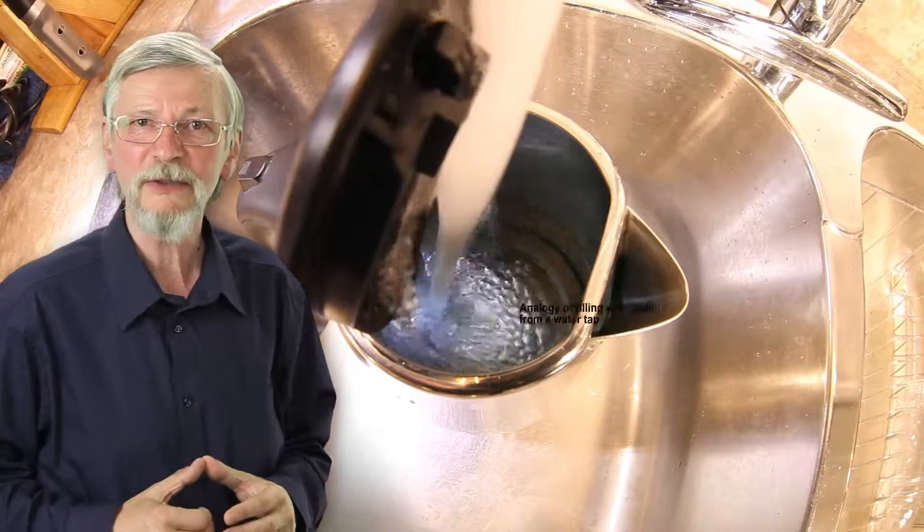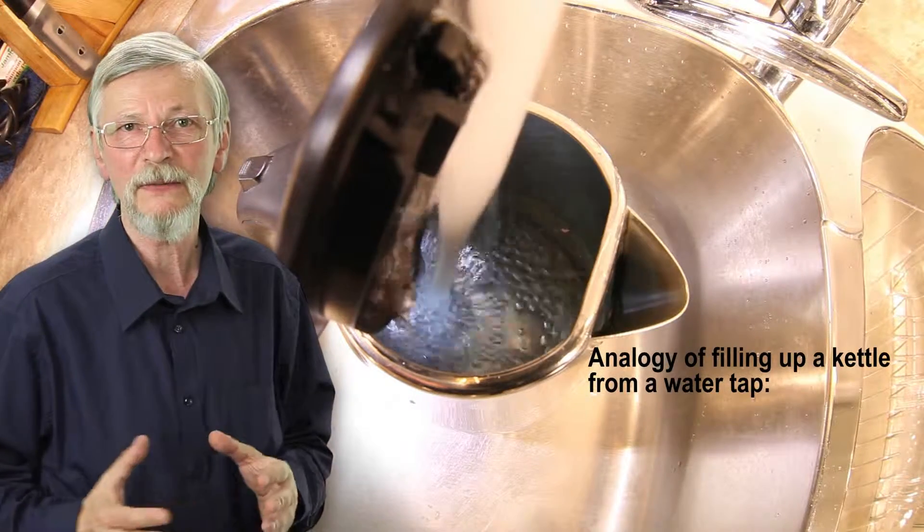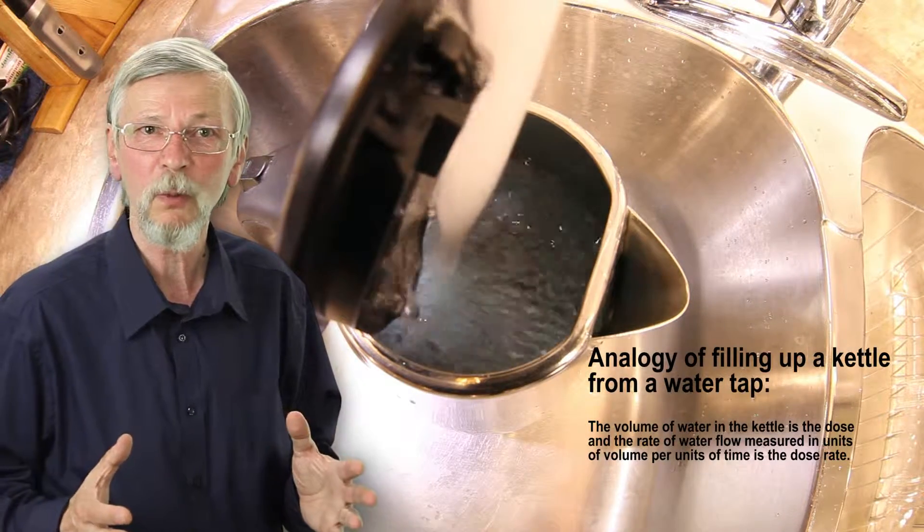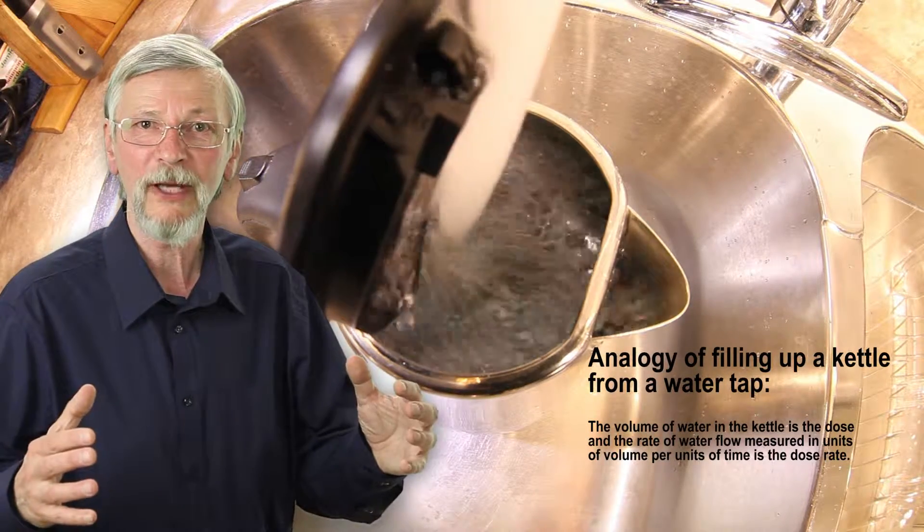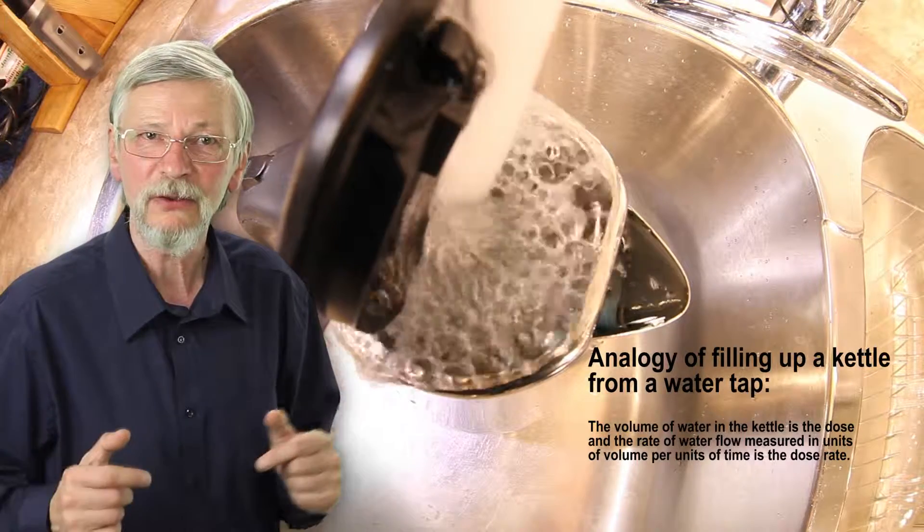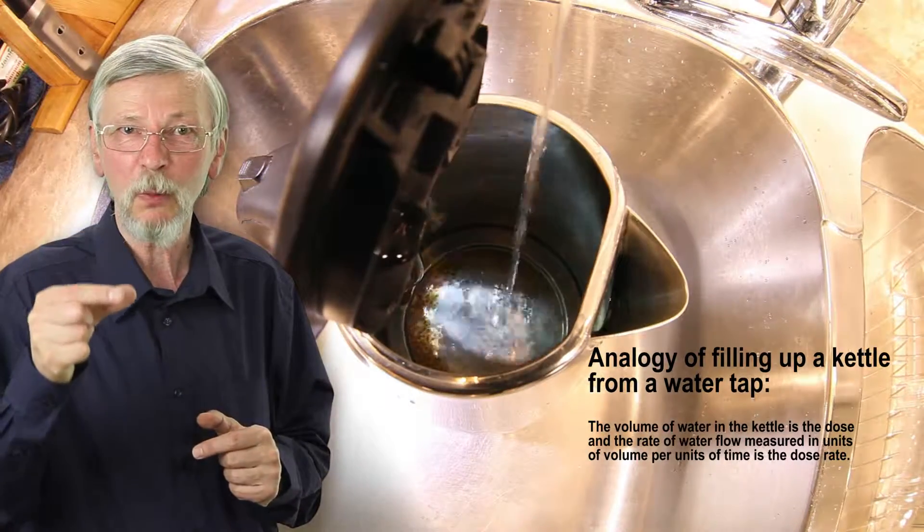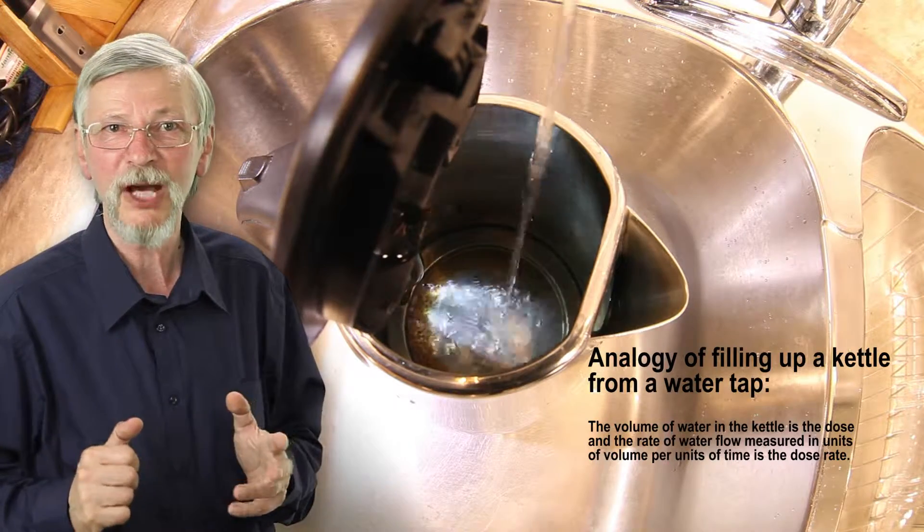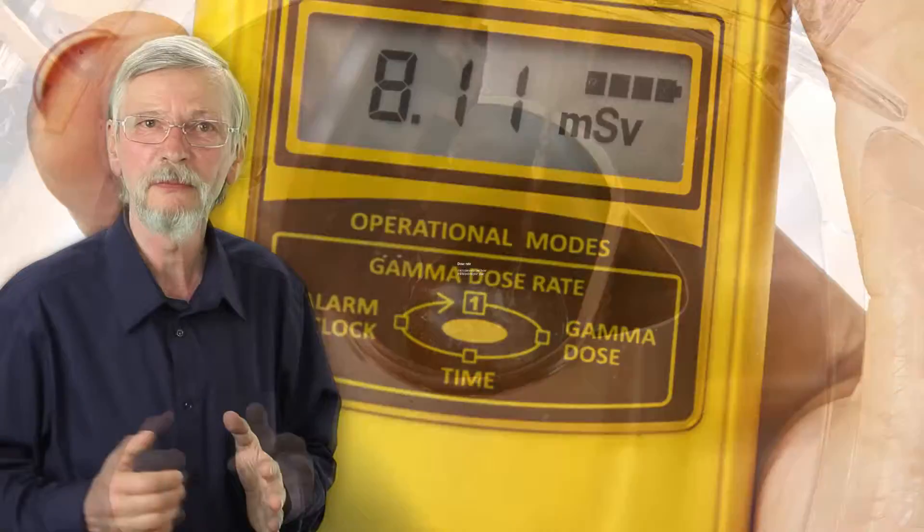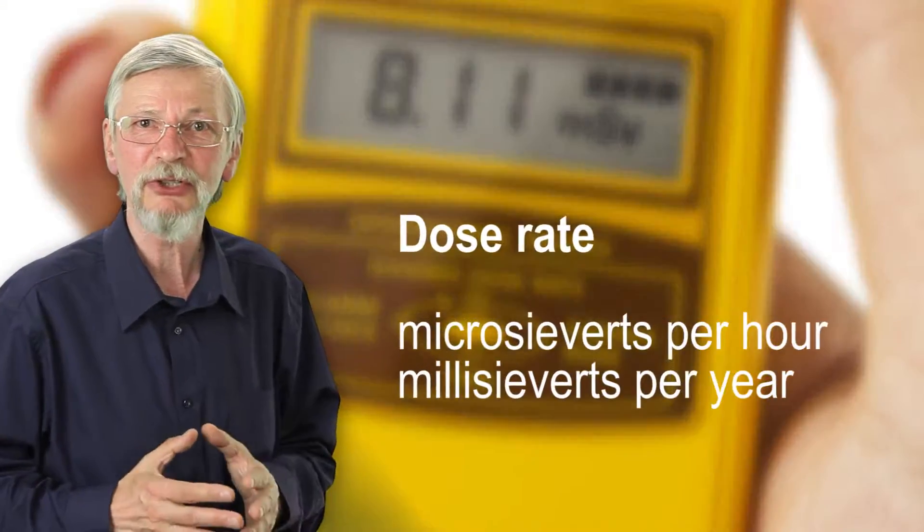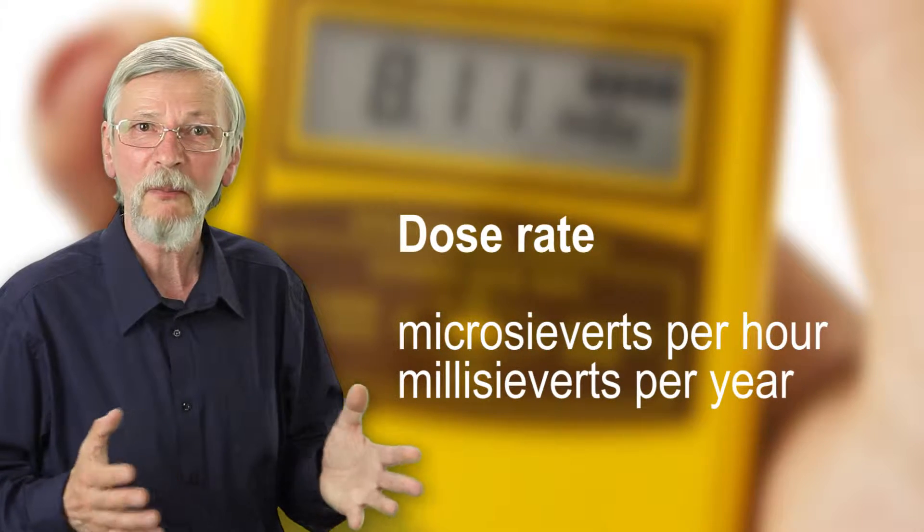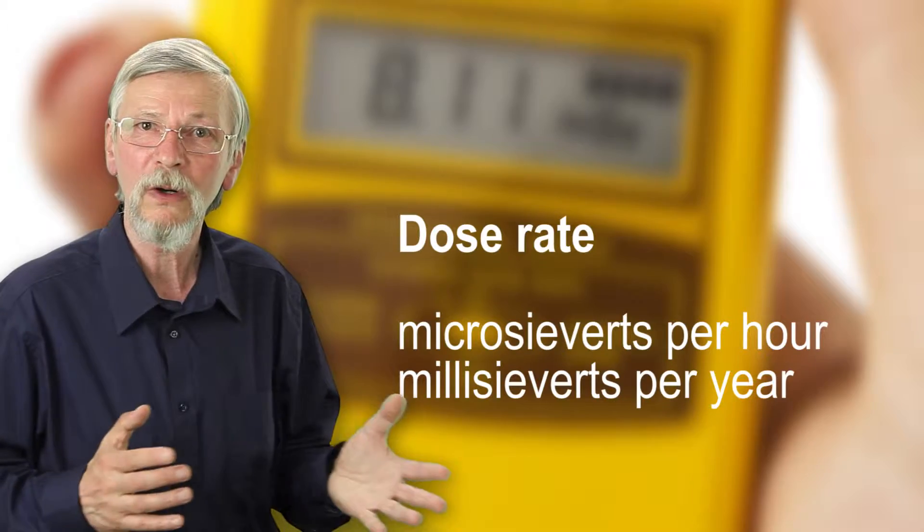To understand the difference between the dose and dose rate, consider the analogy of filling up a kettle from a water tap. The volume of water in the kettle is the dose, and the rate of water flow, measured in units of volume per unit of time, is the dose rate. The dose rate is measured in sieverts per unit time, for example, microsieverts per hour or millisieverts per year.